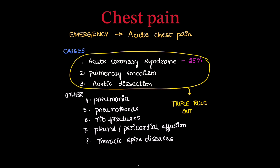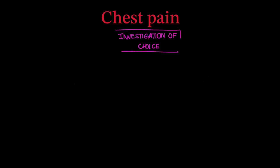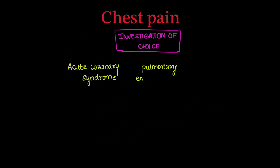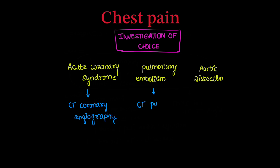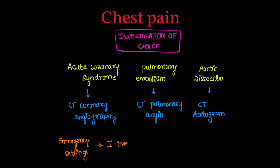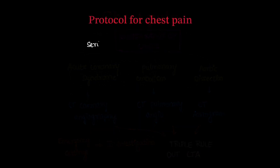For the first three conditions — acute coronary syndrome, pulmonary embolism, and aortic dissection — triple rule out CT angiography can be used as a triage method. When each is independently suspected, specific studies can be ordered: CT coronary angiography for ACS, pulmonary angio for PE, and CT aortogram for aortic dissection. However, when all three are simultaneously suspected, triple rule out CT angio serves as a single one-stop investigation.